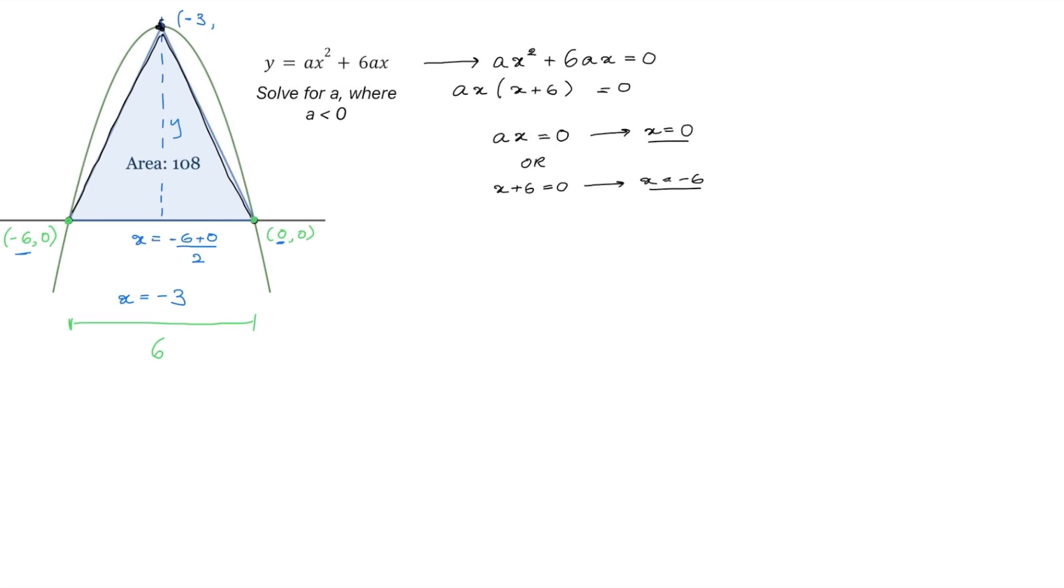So we will have the area which is 108, and it will be equal to the base which is 6 times the height which is y all over 2. And this simplifies to 108 equals 3y. And when we divide both sides by 3, we get y equals 36. And this means that the y coordinate of our vertex is 36.